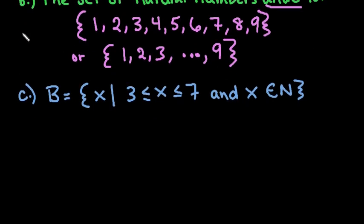The last one is set B, so we write B equals. This is set notation, which puts it in a different format. How you read this is 'x such that' - we always read this as 'such that x is between 3 and 7 inclusive and x is a natural number.'